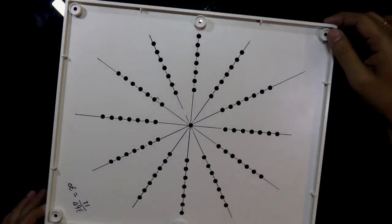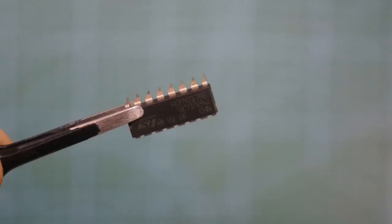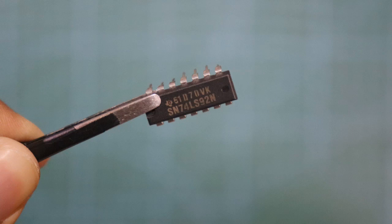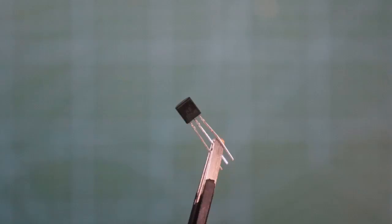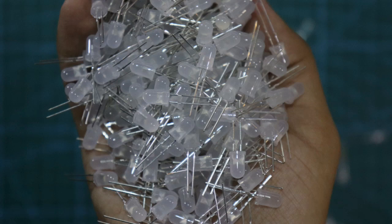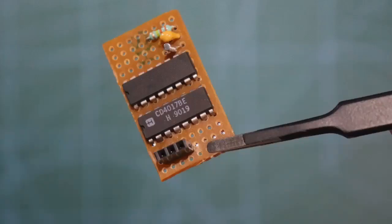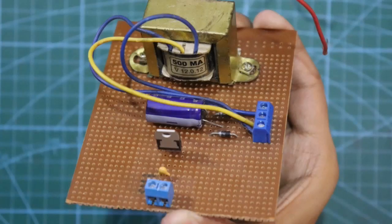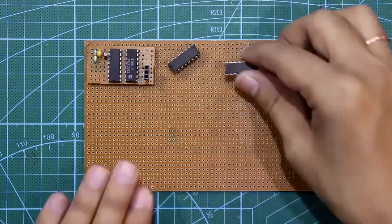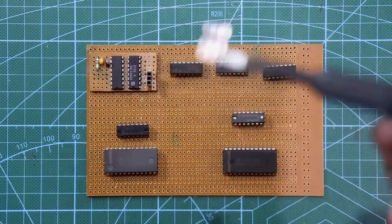For this circuit we need: 74154 demultiplexer IC, 4017 decade counter, 7492 divide-by-12 counter, BC548 transistor, green LEDs, white LEDs, and a blue LED for the second pulse. We take a PCB and place the one-second pulse generator circuit on it. I have already explained that circuit in another video — link in the description. We place components on the PCB using male headers.